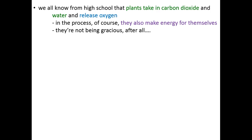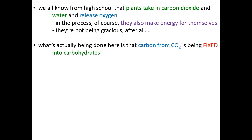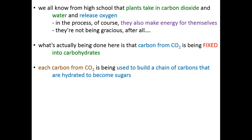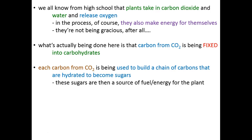When plants do photosynthesis, they're not doing it to make oxygen for us. Plants have no interest in helping us — they're trying to help themselves by making food. More biochemically, what's happening to the carbon dioxide that plants take in is that they are fixing it. Just as we talked about nitrogen fixation — getting nitrogen out of the air and into organic molecules — the same applies to carbon. Carbon dioxide is drawn from the air and put into organic carbon-containing molecules, most notably carbohydrates or sugars.